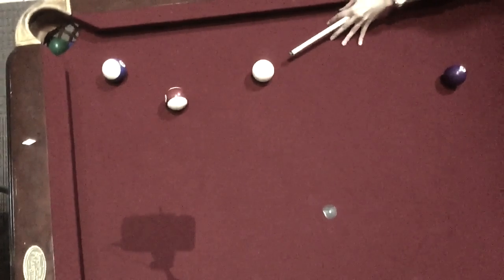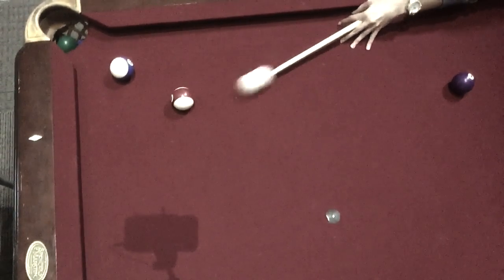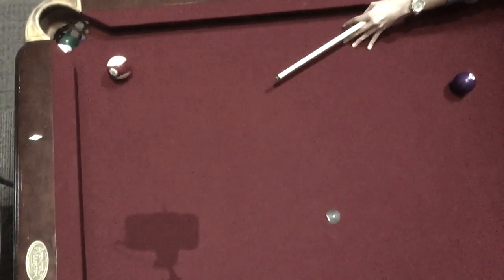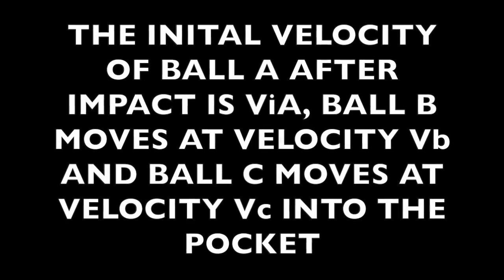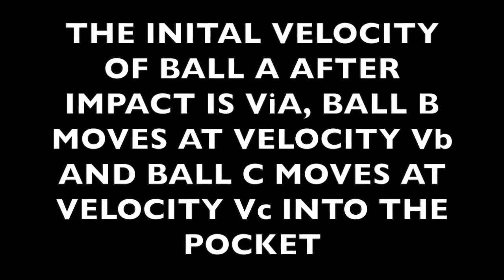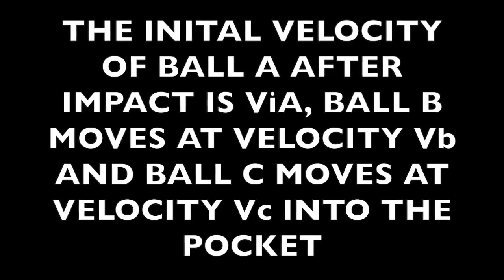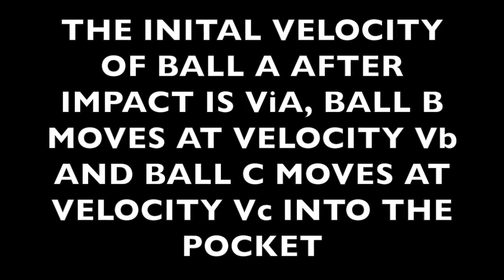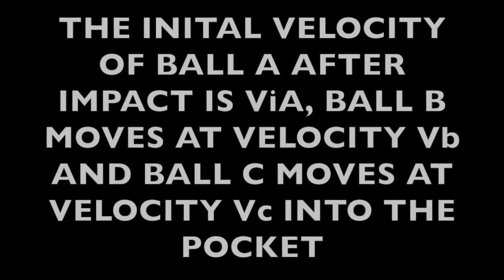Here it is assumed that balls a, b, and c have the same mass and that ball b and c are initially at rest. The initial velocity of ball a after impact is v initial a. Ball b moves at velocity vb and ball c moves at velocity vc into the pocket. Once again, momentum is always conserved.